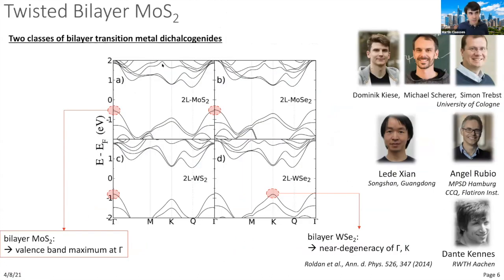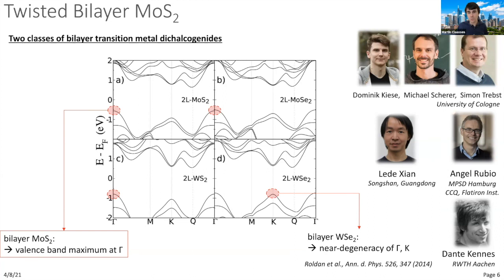The first example is twisted bilayer MoS2, done with Dominique Kiese, Michael Scherer, and Simon Trebst at the University of Cologne, Lede Xian and Angel Rubio at the Max Planck Institute, and Dante Kennes in Aachen. This work is motivated by the observation that in the untwisted bilayer of 2H-phase transition metal dichalcogenides—trigonal prismatic coordination—there are two classes. In one class, the valence band maximum lies at Γ with the K-valley valence band maximum at significantly lower energy; this is the case for MoS2.